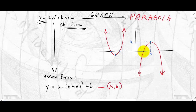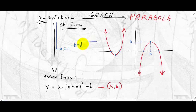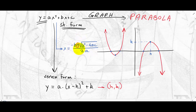The x-intercepts of a parabola: from the standard form, the x-coordinates of the x-intercepts are x = (−b ± √(b² − 4ac)) / 2a. These are the x-values of the x-intercepts — there are two different values because of the plus or minus.